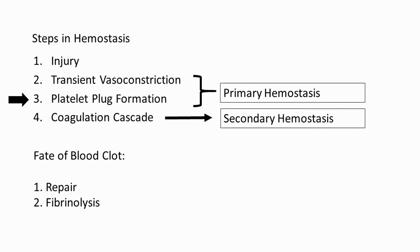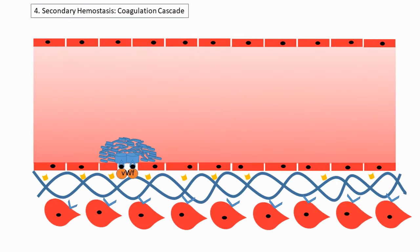We'll now move on to the final step in hemostasis: the coagulation cascade. This step can be difficult, so don't feel demotivated if you don't get it the first time — just rewatch a few times. The platelet plug formed in primary hemostasis is fairly weak and could dislodge and travel to distant blood vessels. The coagulation cascade strengthens the platelet plug by producing a fibrin mesh that attaches on top of it like glue, stabilizing and completing the blood clot.